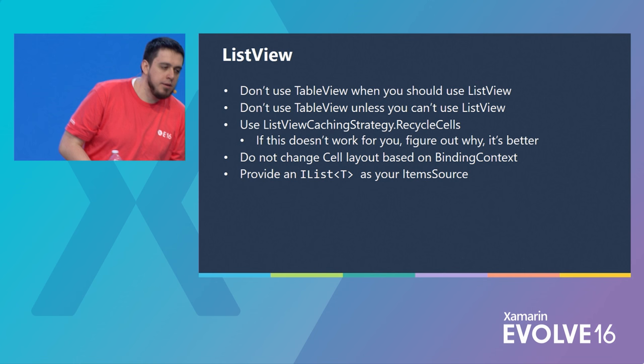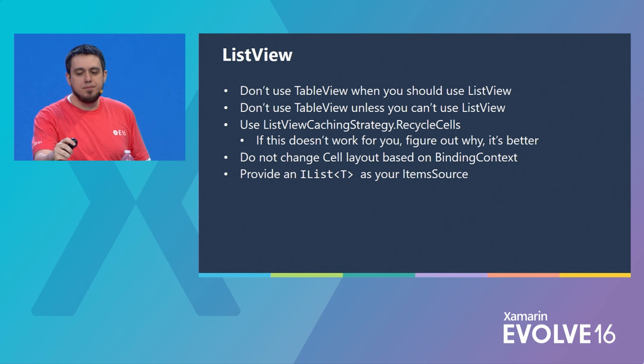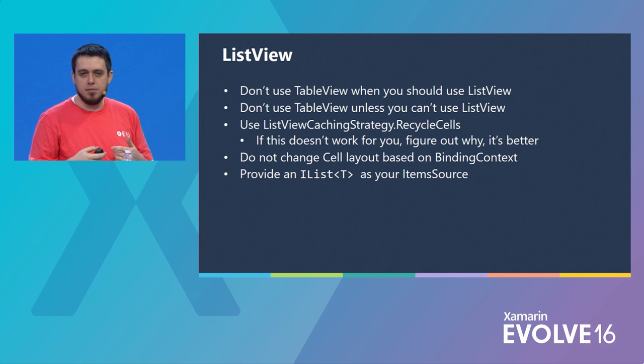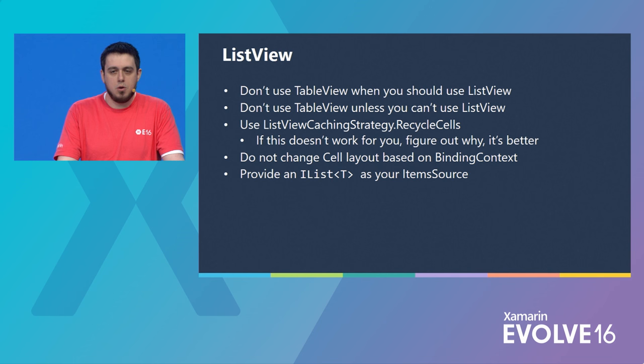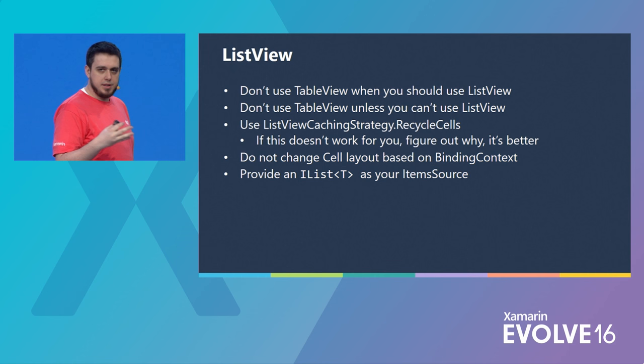List views are great — they're virtualized, they perform well, they're easy to use. That said, table views exist — please stop using table views. Use list views with a data template selector instead. Also, use the new caching strategy we provide on list views for recycling cells. This is far more efficient than the old caching strategy, which is still the default because we didn't want to break users' apps. So you have to enable that by hand, but please do so because you'll really gain from it.